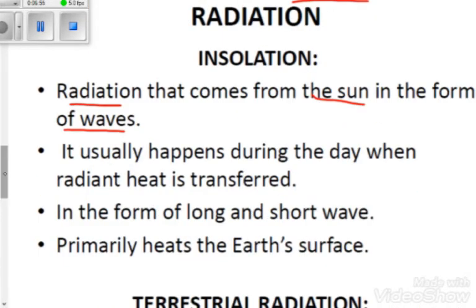Insolation involves the emission of heat waves and usually happens during the day when radiant energy is transferred. It happens during the day because the Sun is present and able to emit those waves. During the night there is no Sun, so insolation does not occur at night — it only happens during the day when radiant heat is transferred from the Sun.